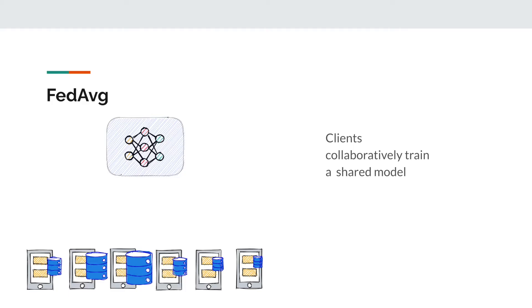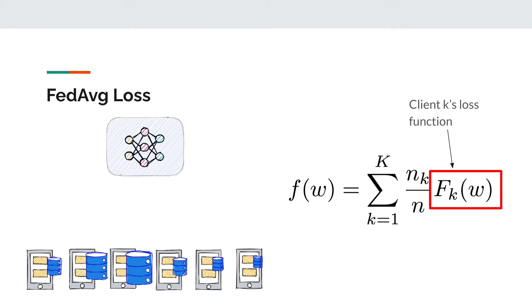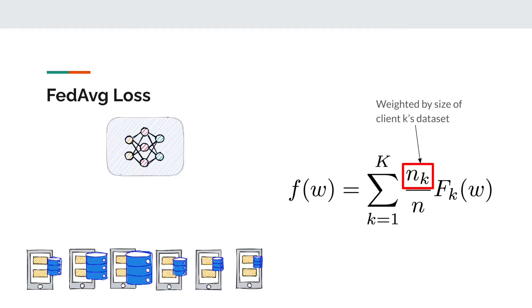Now let's move on to the seminal paper in federated learning. This introduces an algorithm, FedAverage, which tries to train a shared model across clients. It does this by minimising an overall global loss that is a weighted average of the individual clients' losses. In this function there are k clients and each client has its own loss function f_k, which it computes on device. We then weight each of the losses by the size of the client's dataset, so devices with larger datasets will have correspondingly larger weighted losses.